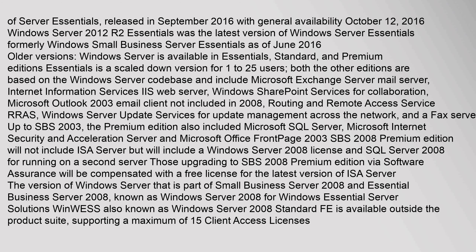Up to SBS 2003, the Premium edition also included Microsoft SQL Server, Microsoft Internet Security and Acceleration Server, and Microsoft Office FrontPage 2003. SBS 2008 Premium edition will not include ISA Server but will include a Windows Server 2008 license and SQL Server 2008 for running on a second server. Those upgrading to SBS 2008 Premium edition via Software Assurance will be compensated with a free license for the latest version of ISA Server.